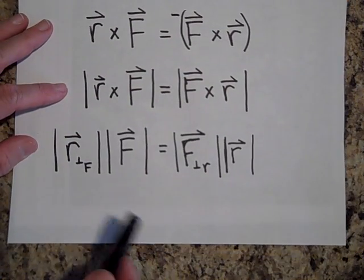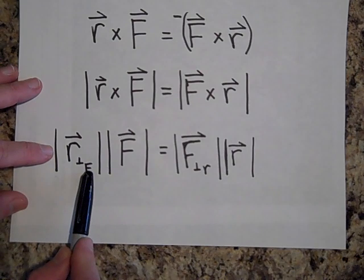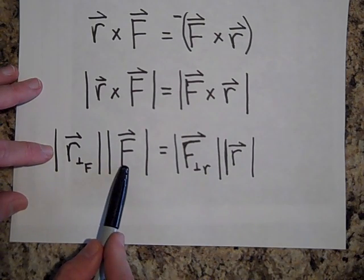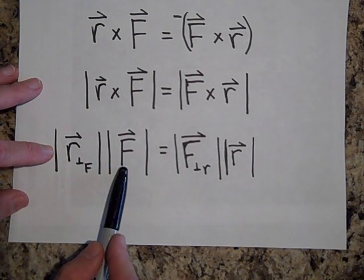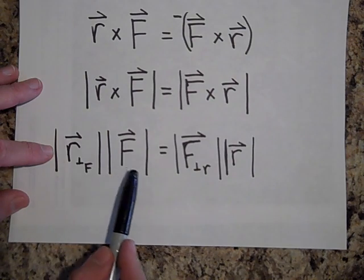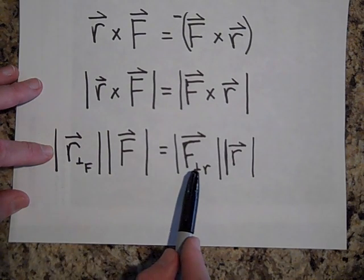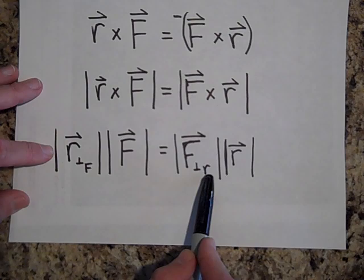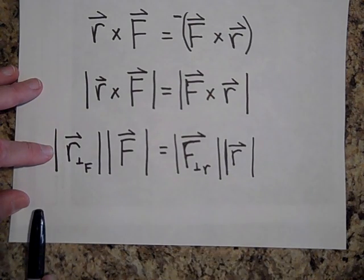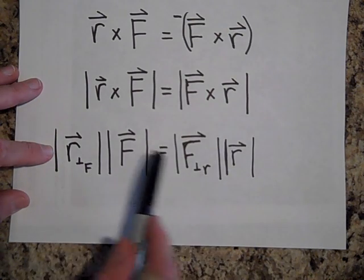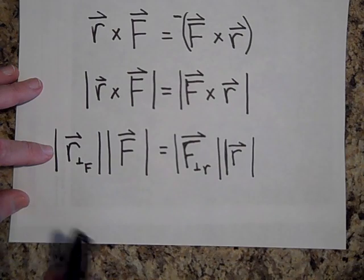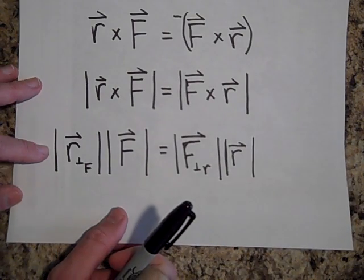So what I'm saying is, if you take the part of R that's perpendicular to F and multiply by F, you'll get the same exact number for your magnitude as if you took the magnitude of the force that's perpendicular to R and multiplied it by R. So it doesn't matter which one you take perpendicular to the other as far as magnitude is concerned.